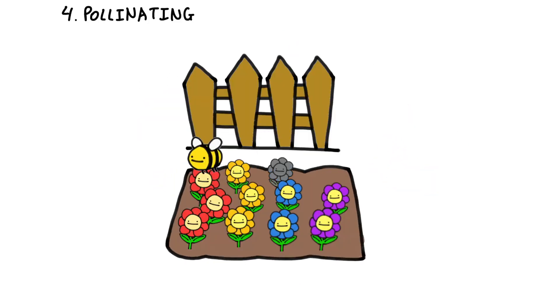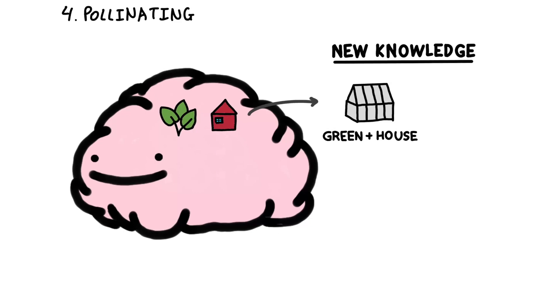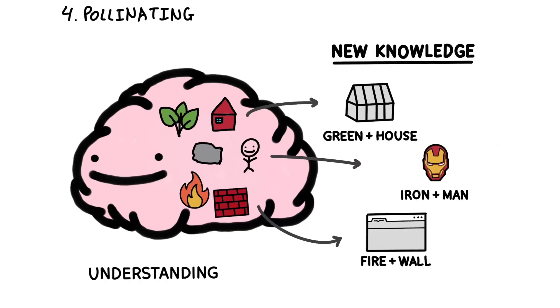Step 4 is pollination. In a garden, cross-pollination diversifies plants. In our brain garden, connecting new knowledge to existing concepts creates a web of interconnected ideas. This deepens our understanding and retention.